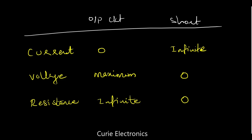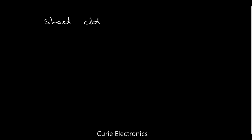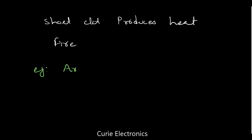Heat is produced. When the short-circuit happens, it produces heat. If heat is there, there is always a chance of fire. Can you name one example of where we use short-circuit? That is arc welding — to join metals, we make use of short-circuits.